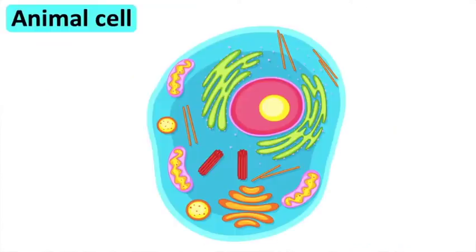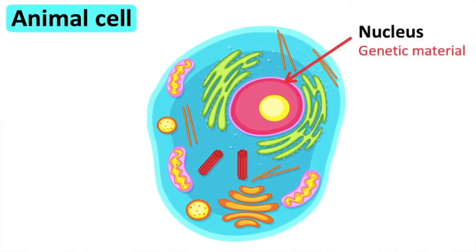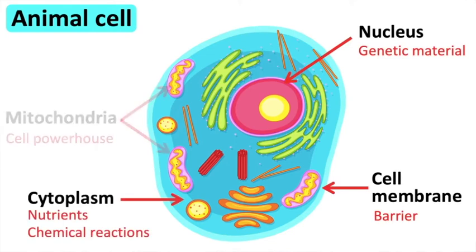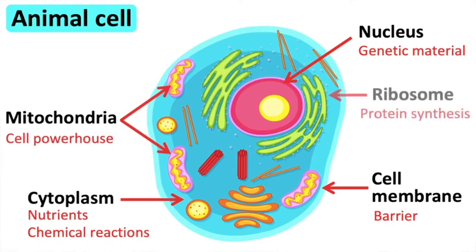Animal cells have irregular shapes. They contain a nucleus, cell membrane, cytoplasm, mitochondria, and ribosomes. The nucleus contains genetic material. This controls the cell's activities.